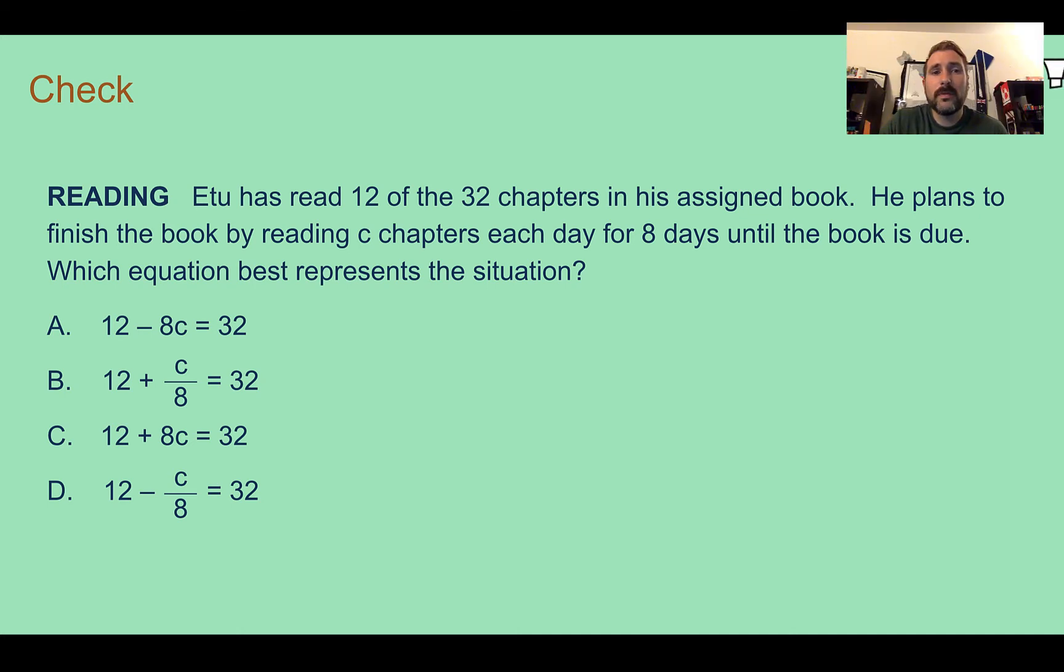Check your answer. In order, let's first go through a variable for what we do not know. If we are looking at the variables that they gave us, they said C chapters. So C is the unknown amount of chapters.